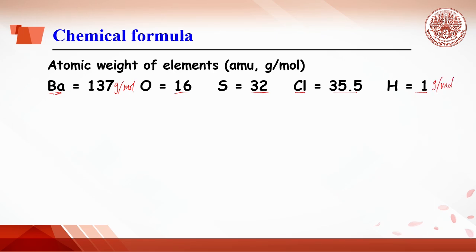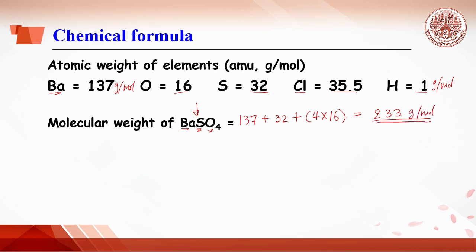Once compounds are produced, the molecular weight of the compound will be obtained from addition of atomic weight. For example, the formula of barium sulfate is shown like this. The molecular weight of this compound is equal to barium 137, plus sulfur 32, plus oxygen 16. They have four atoms, so it equals 233 grams per mole.